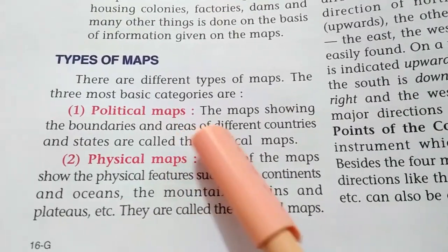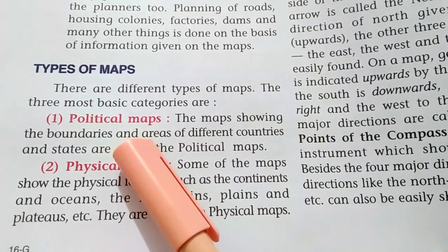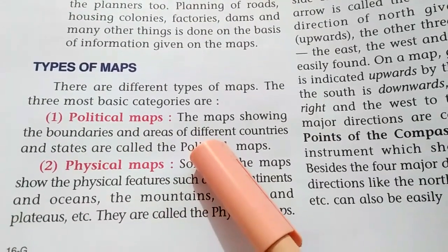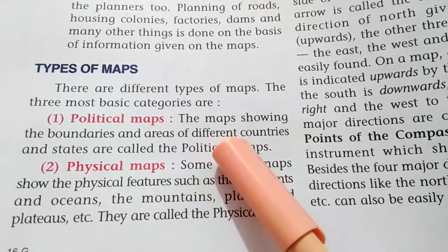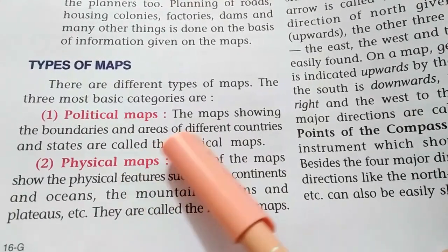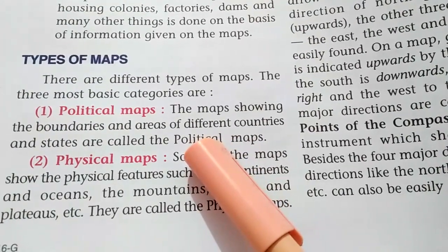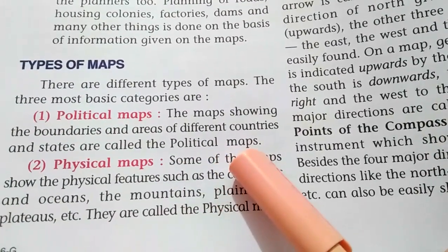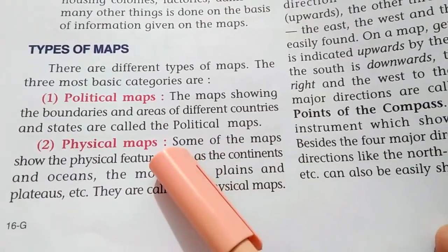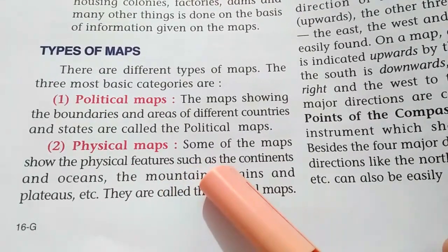The first one is political maps. These are maps showing boundaries and the actual areas of different countries and states. Maps that tell about the full area of a country or state are called political maps.